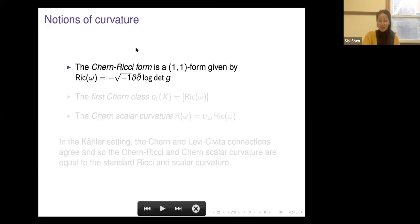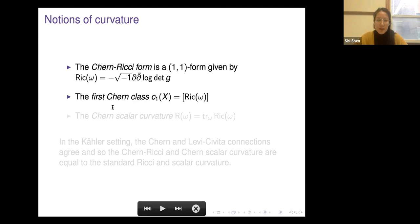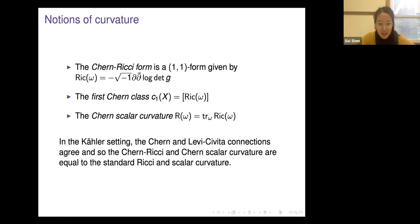Let's discuss notions of curvature. The Chern Ricci form is a (1,1)-form given by -∂∂̄ log det(g). The first Chern class is the ∂∂̄ class of this Ricci form. The Chern scalar curvature, denoted R(ω), is the trace of the Chern Ricci form. In the Kähler setting, the Chern and Levi-Civita connections agree, so the Chern Ricci and Chern scalar curvature equal the standard Ricci and scalar curvature. In the non-Kähler setting, there are four different possible Ricci curvatures and two possible scalar curvatures; we focus on tracing over the Chern Ricci form.